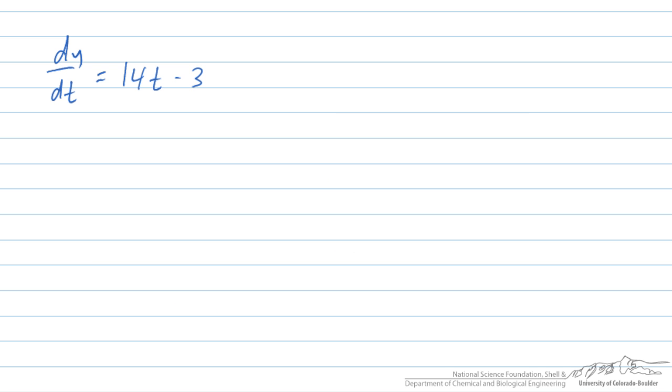So I have written my function here: dy/dt is equal to 14t minus 3. In the Euler method, we estimate dy/dt as Δy/Δt, and that is equal to 14t minus 3, and you notice here that I have added this subscript i.